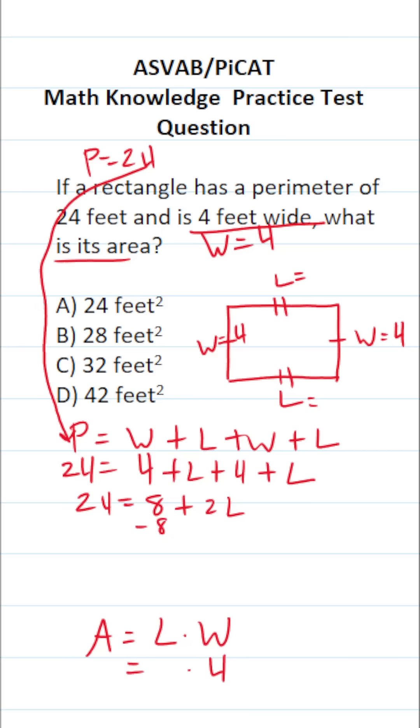So I'm going to subtract 8 from both sides. In doing so, this crosses out, leaving me with 2L over here. 24 minus 8 is going to be 16. And to get L by itself, we're going to divide both sides by 2. This says L equals 16 over 2, which is 8. So we know the length of this rectangle is 8.